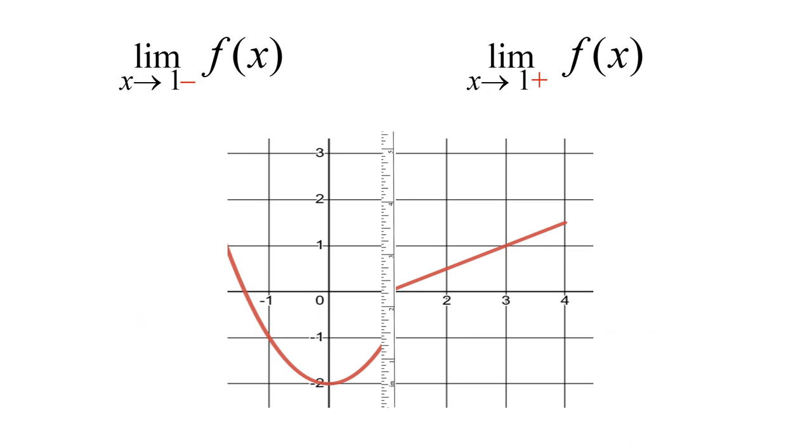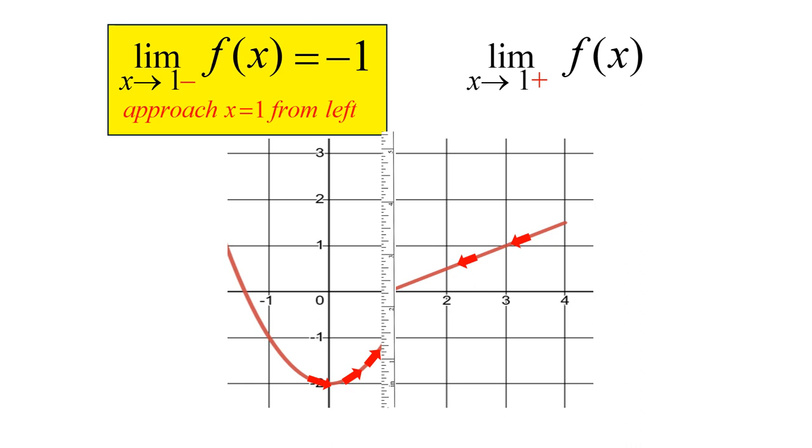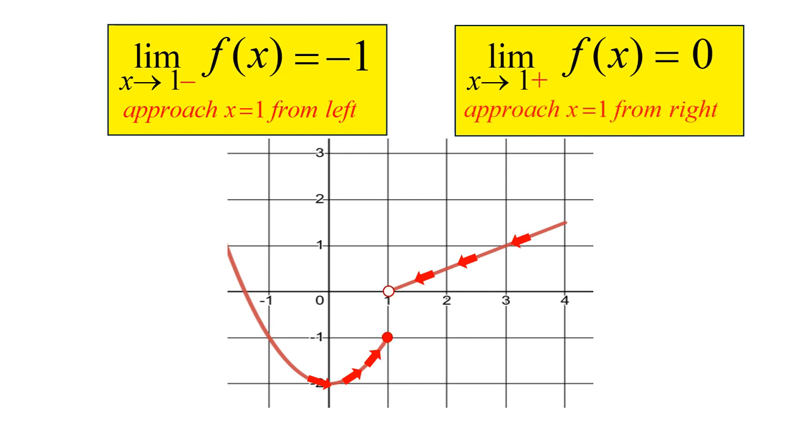Here's another funny graph with that ruler. As we approach x equals 1 from the left, we expect to get a value of negative 1. That is the left-hand limit. As we approach x equals 1 from the right, we get a different limit. 0, left-hand limit, right-hand limit. They're not the same.